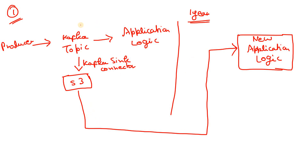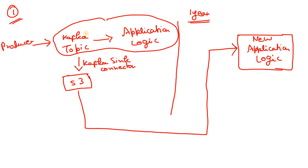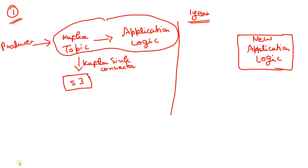The problem with the S3-to-application approach is that the S3 connection is new code we have to develop. But if you observe, we already have a code base which consumes data from Kafka. To consume from Kafka we don't need to write new code. So if we have less time, a better approach would be to bring the S3 data back into Kafka in a new topic and consume from there.